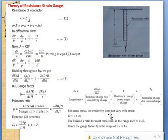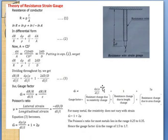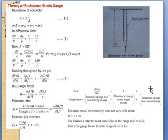For many metals, the resistivity does not vary with strain, so the resistivity term can be neglected. Therefore, the final gauge factor simplifies to: Gauge Factor = 1 + 2μ.